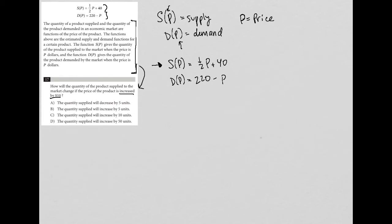They didn't tell us what the price is before it increases by $10, which means I'm going to just make something up. You have the liberty to make up a number in cases like this. So I'm going to say that my price is 100.